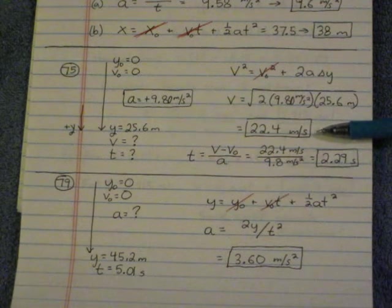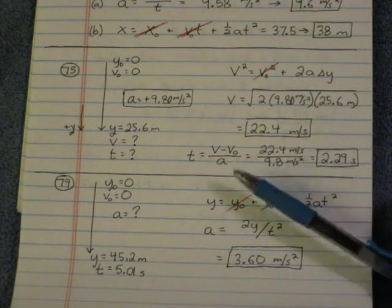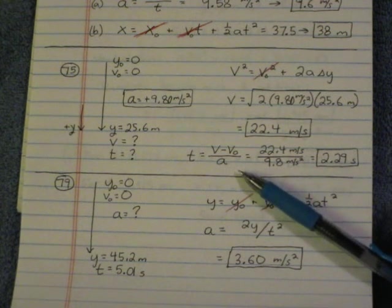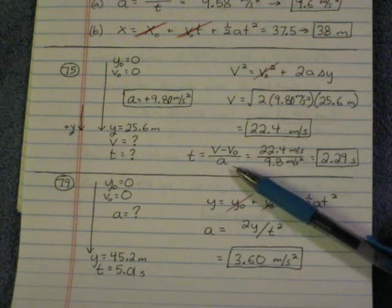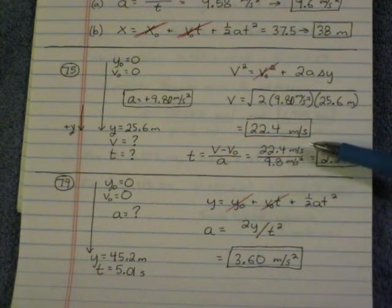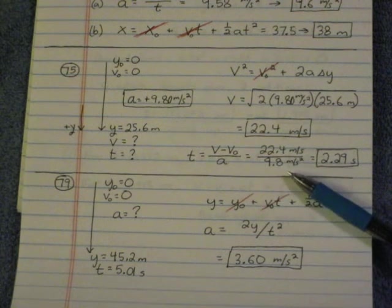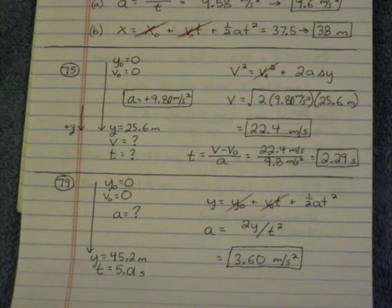Now that you know that 22.4 meters per second is the final velocity, the easiest way to solve the other part for time is to do V minus V naught over A. That's from another kinematic equation. Change in velocity is 22.4 meters per second minus 0. Divide by acceleration, 9.8. You get 2.29 seconds.